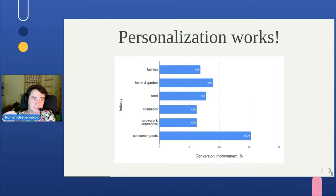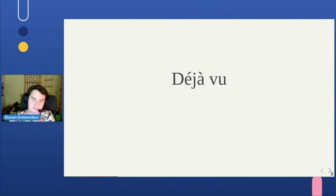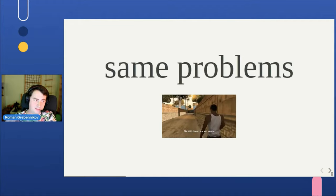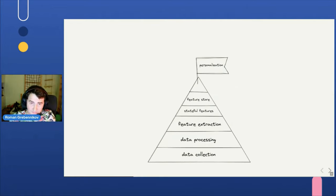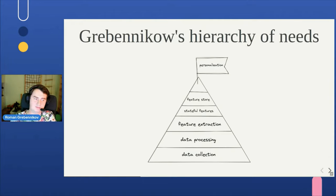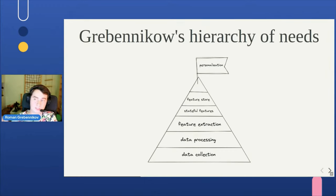While building personalization experiences for different websites, we feel a strong sense of deja vu — because even though the verticals, the sizes, and the goals are different, the technical core of the problem is usually the same. It's just hard to make online real-time personalization because you need a giant pile of data processing: extract features, compute complicated stuff on top of that, have some feature store, and then there is a cherry on top of that for the personalization.